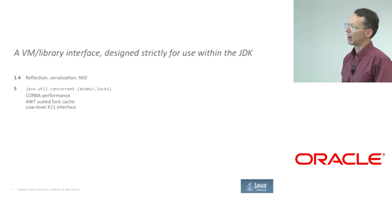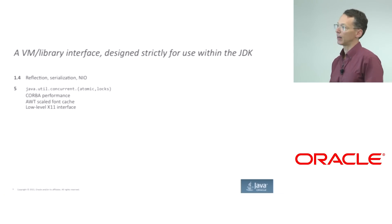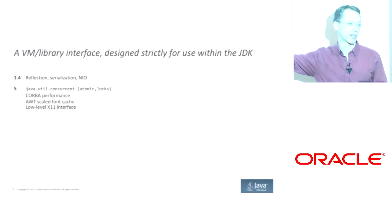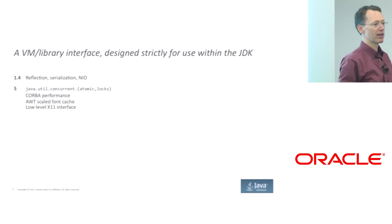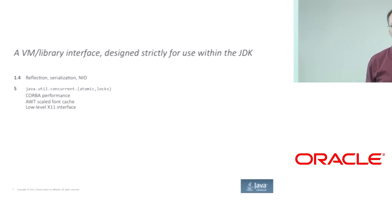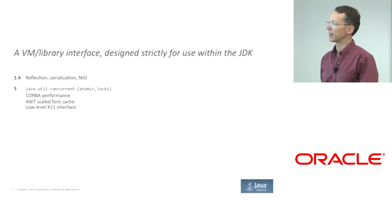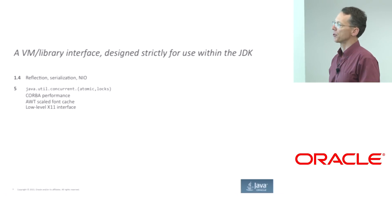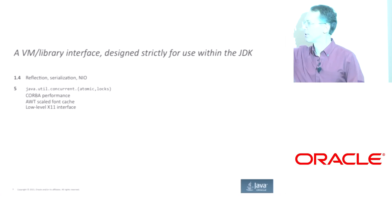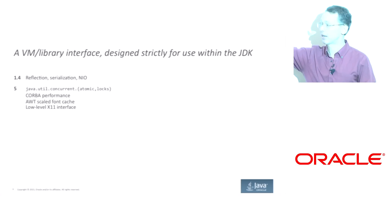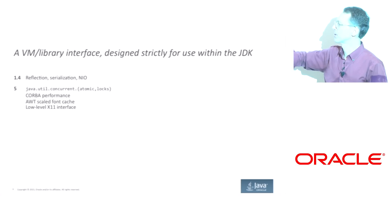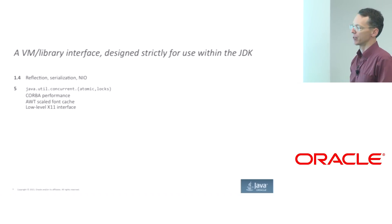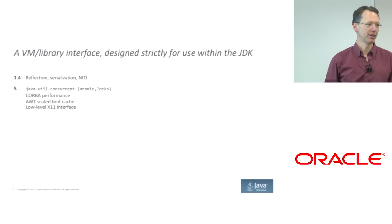In Java 5, it was extended further, principally to support JSR 166 — java.util.concurrent, the Atomic and Lock sub-packages. That's when things like park and unpark appeared. It was also used for coroutine performance, for the five people who care about coroutine performance.